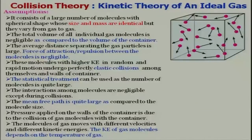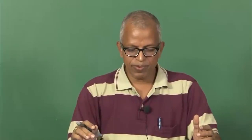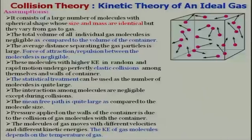Therefore, we will have to do that in a statistical way — that means, in an average way. This treatment is possible only when the large number of molecules involved is quite large. If I take only a few molecules and consider this statistically, the statistics have no meaning. Therefore, large number of molecules will be there. The interaction among the molecules is negligibly small except during the collision. Mean free path is quite large compared to molecular size.